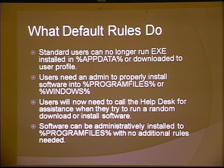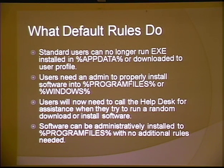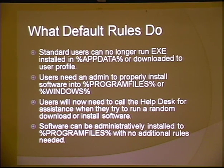Now that we've limited admin use and implemented the default rules, where are we? Standard users can no longer run any executable installed in AppData or downloaded into the user profile. When they want to install software, they're going to have to trigger a call to the help desk. We need training with our help desk: when an end user calls and says 'this isn't running,' don't just right-click and choose run as admin — escalate the issue. Someone needs to vet that application. We can still administratively install software into Program Files or Windows, and Windows patches work fine as long as they're installed into the right place.